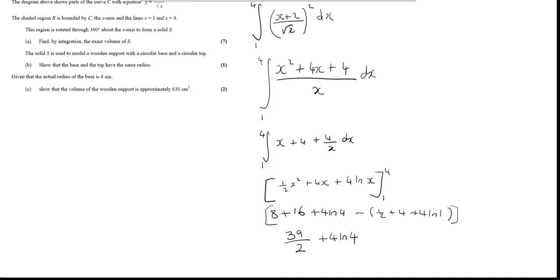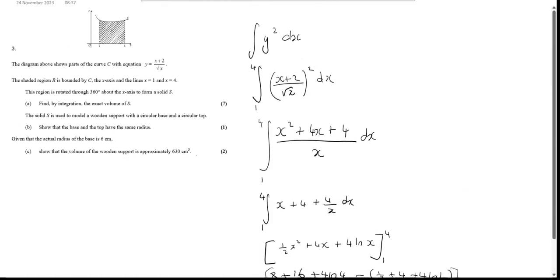Right, and now part B. The solid S is used to model a wooden support with a circular base and a circular top. Okay, so if this volume is formed by rotating around the x-axis, and it's going to have a circular top and a circular bottom, that means it must have gone sideways, and this bit here, when that was rotated, that must be either the top or the bottom, and then this will be the other one. Okay, so you're going to rotate it around 360 degrees and then put it on its side.